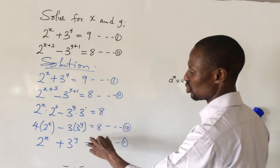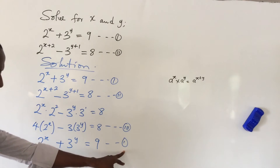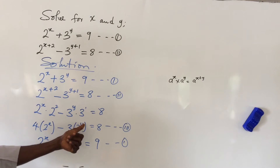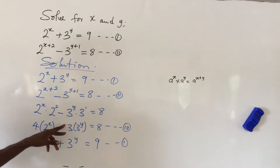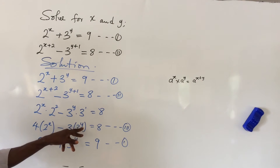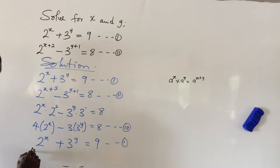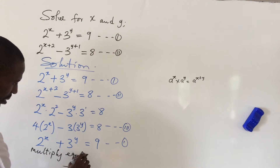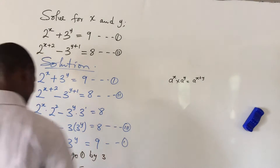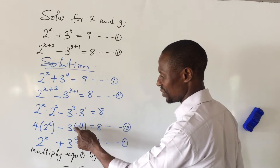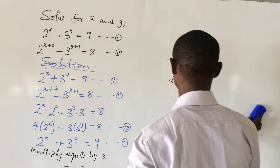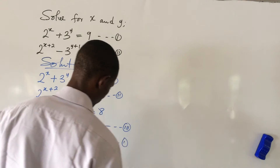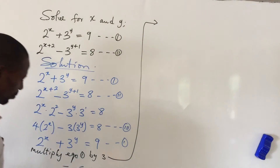Before we can eliminate, we have to make the coefficients equal. Let's eliminate 3 to the power of y. To eliminate 3 to the power of y, we have to multiply equation one by the coefficient of 3 to the power of y in equation three, which is 3, so that the coefficients of 3 to the power of y in both equations become the same.